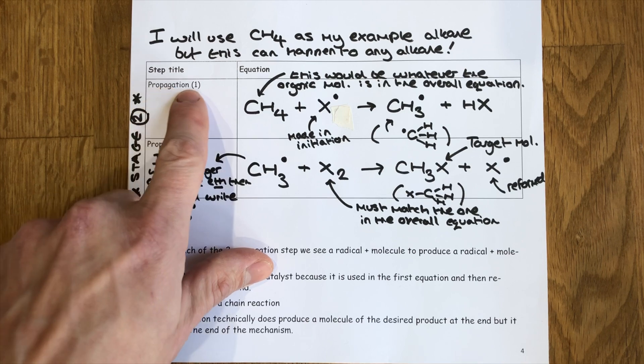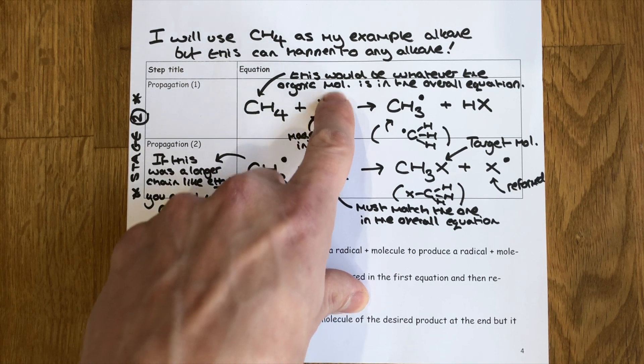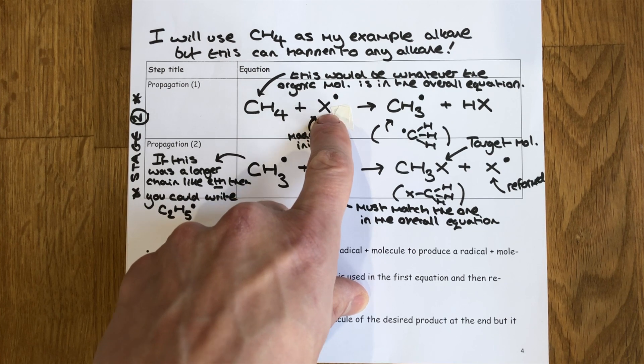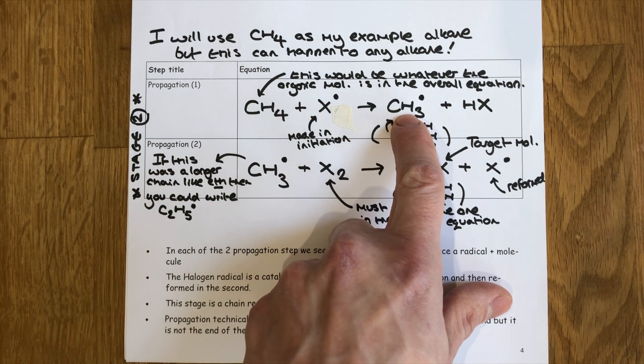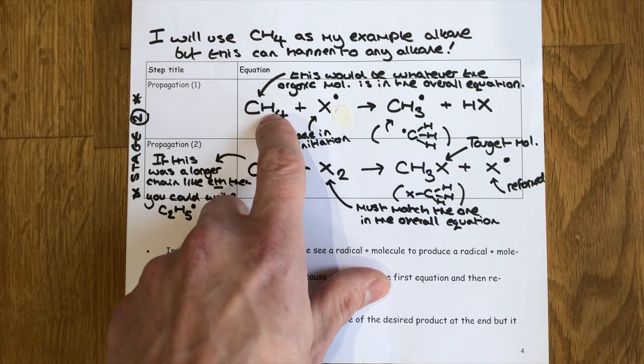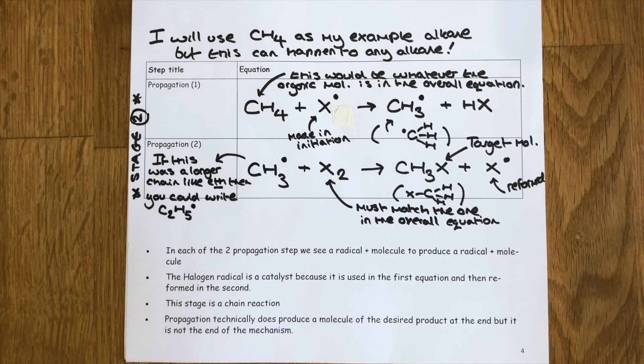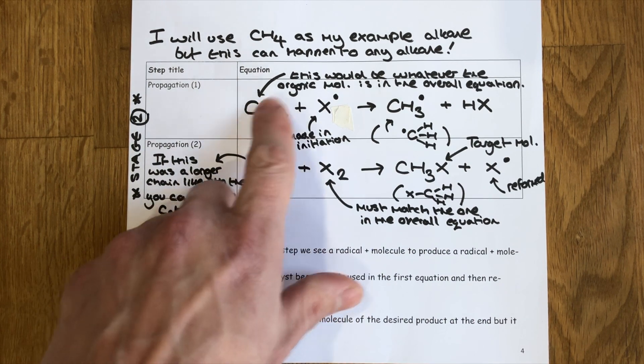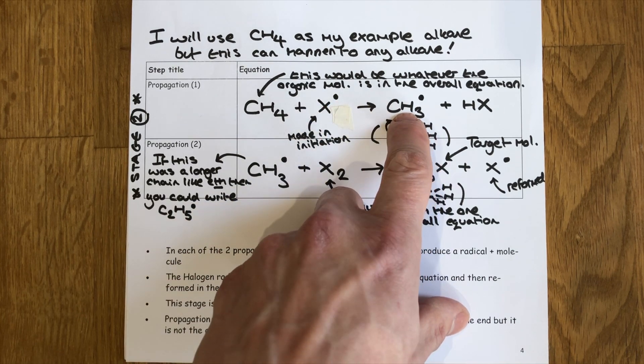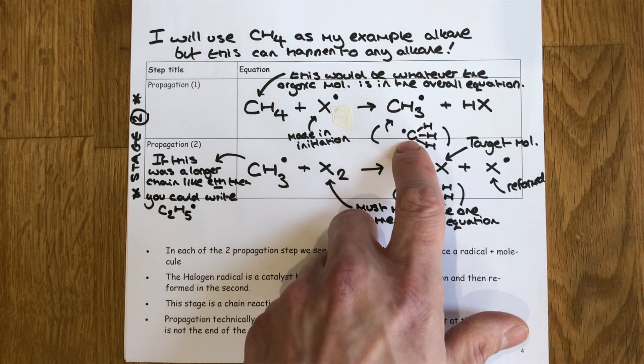For propagation one, our first stage of propagation, we see that whatever our starting alkane molecule is reacts with our radical that we created from initiation. What happens is the X radical causes for a bond to be broken between a carbon and a hydrogen and the radical takes the hydrogen for itself. The breaking of the bond causes the carbon that was bonded to the hydrogen to be left as a free radical. So I now have an alkyl radical here shown in the products. Our general template is starting molecule add halogen radical gives alkyl radical and hydrogen halide.